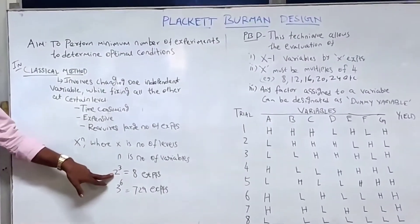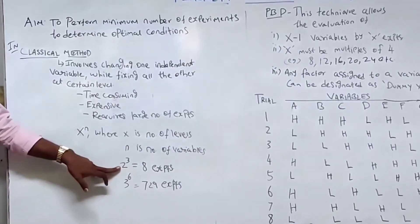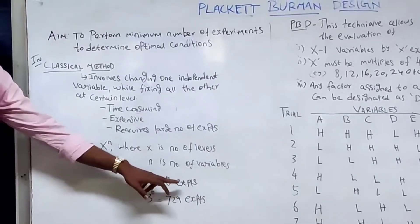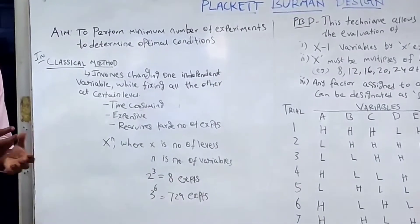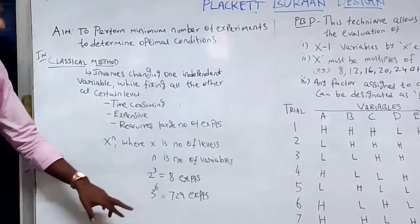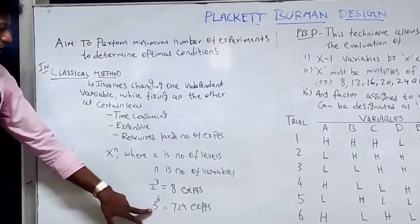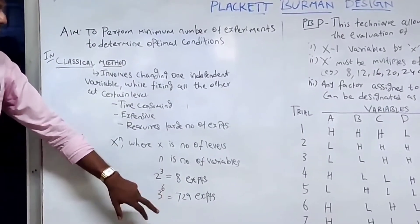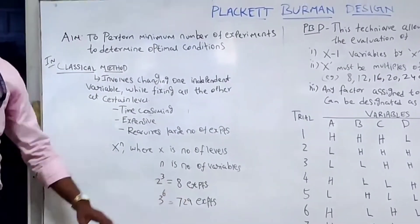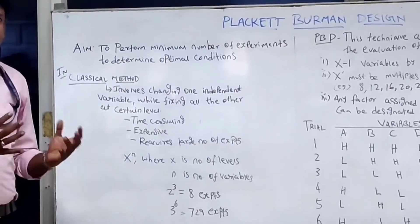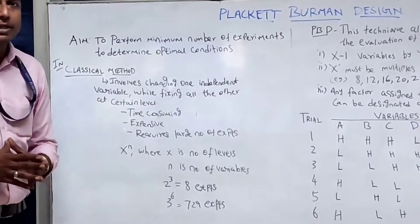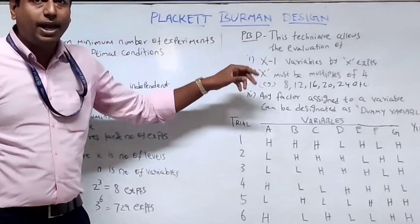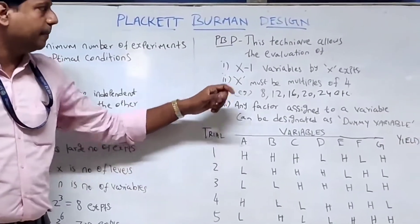For example, you have n number of variables: glucose, yeast extract, beef extract, or something. The concentration of one variable is fixed and the other variables are changed. This takes time, is expensive, and requires a large number of experiments. The formula is x to the power n, where x is the number of levels and n is the number of variables.